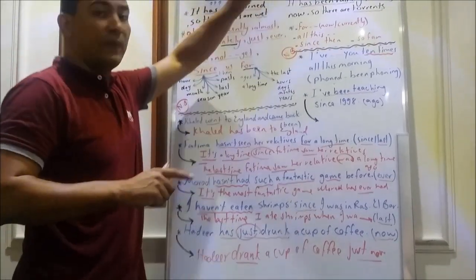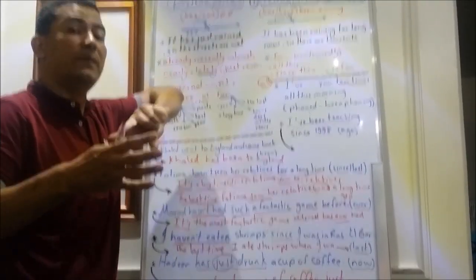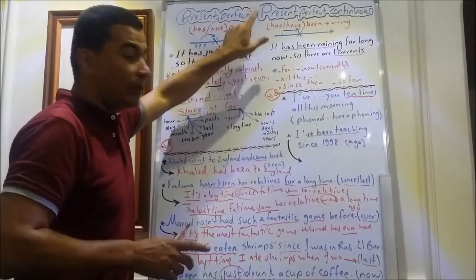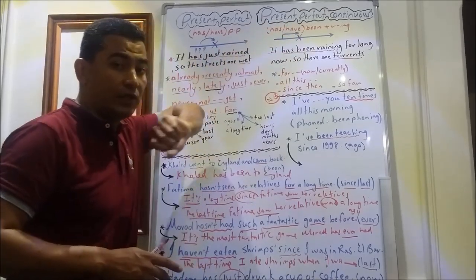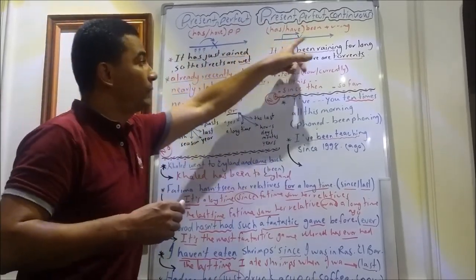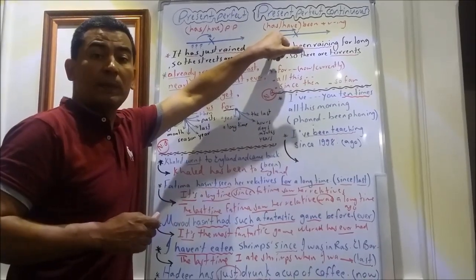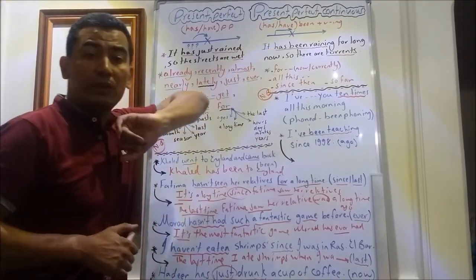Let's move to the present perfect continuous, or what we say present perfect progressive. Its structure: has or have plus been plus verb in -ing. On the timeline here, past, present, future. An action that started to happen in the past and is still continuing till now.